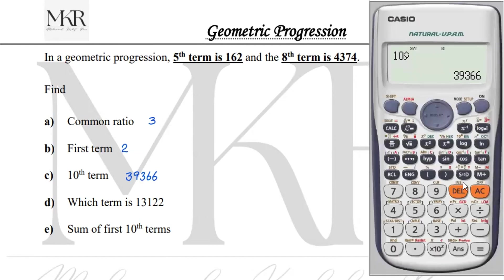To find which term equals 13122, press shift, one, five, and then four key. Put the term value from the question and press equals. The ninth term is 13122.